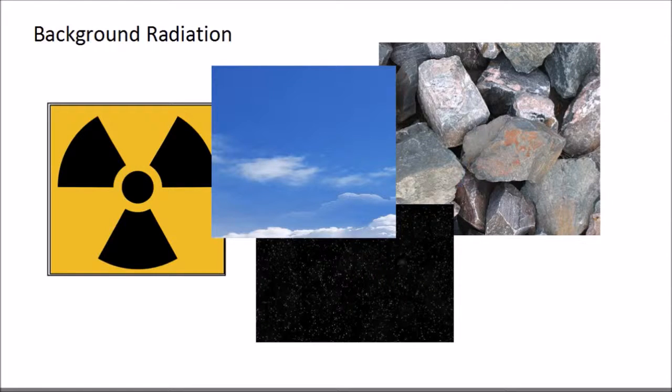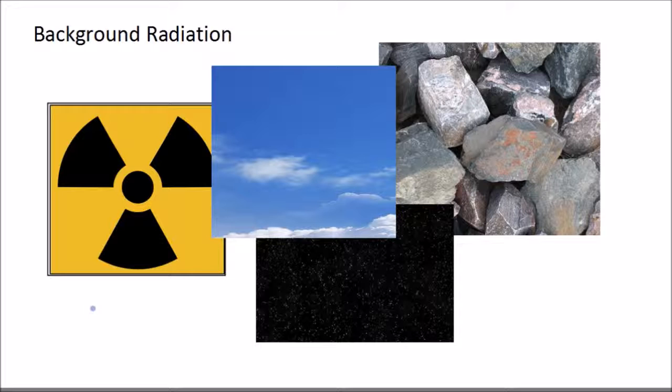They exist in space. And of course, from things like x-ray machines and nuclear reactors. And all of these things contribute to what's called the background radiation. So a Geiger counter would click even when there is no radioactive source nearby simply because of the background radiation.